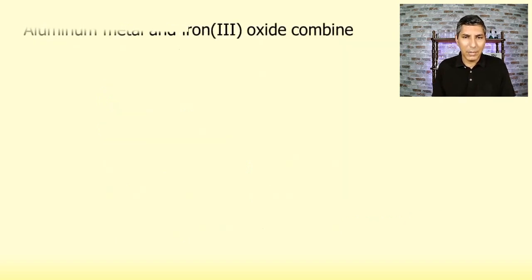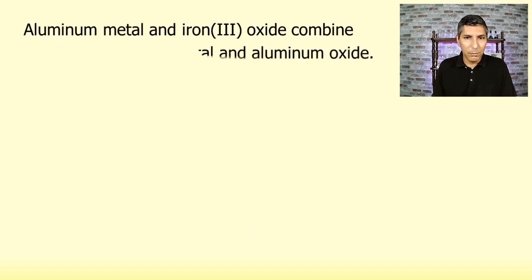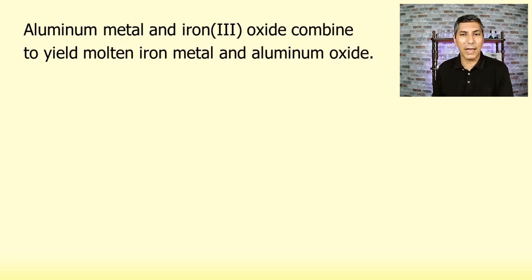Well, let's say we have a chemical reaction. A chemical reaction like this, where aluminum metal and iron oxide combine to yield molten iron metal and aluminum oxide. That chemical reaction is called the thermite reaction.